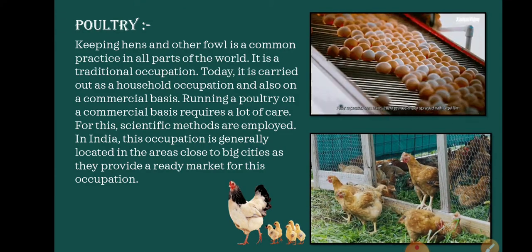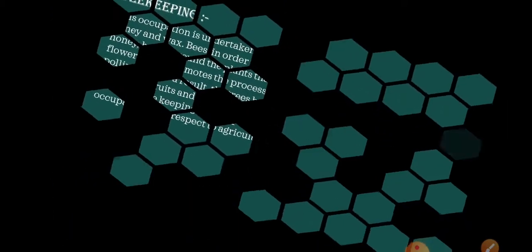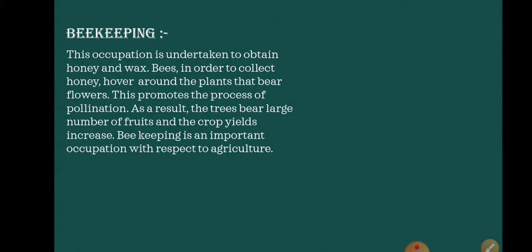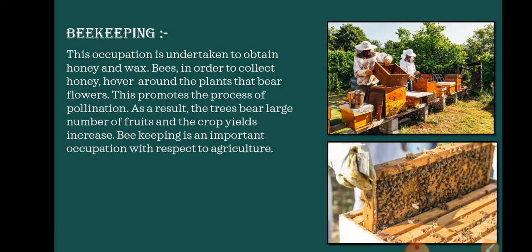Next comes beekeeping. This occupation is undertaken to obtain honey and wax. Bees, in order to collect honey, hover around the plants that bear flowers. This promotes the process of pollination. As a result, the trees bear a large number of fruits and the crop yields increase. Beekeeping is an important occupation with respect to agriculture.